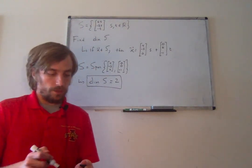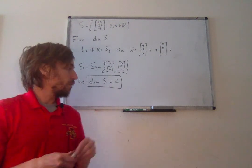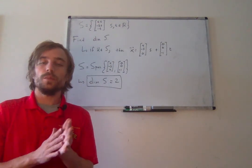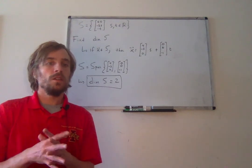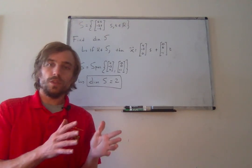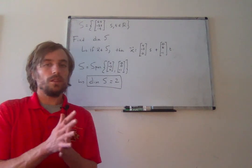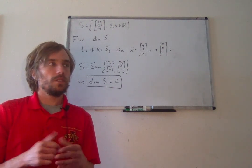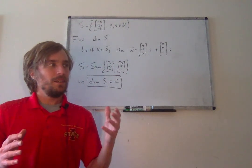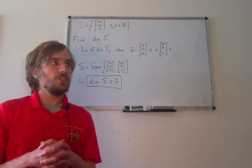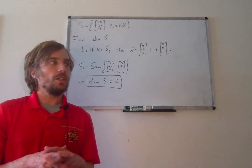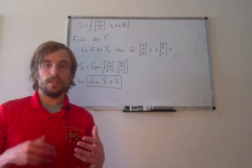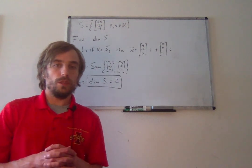We'll continue in the next video to talk about more things related to this, specifically the dimension of subspaces. In video three of this section, I'm combining it with the next section because it's a nice transition — the next section isn't super long — and we'll talk about how the dimensions of the column space and null space of a matrix are related.